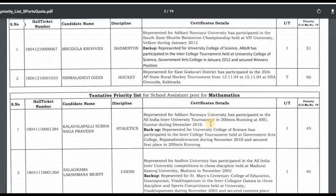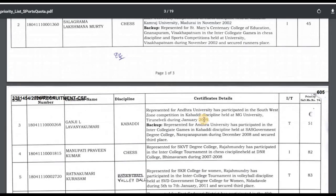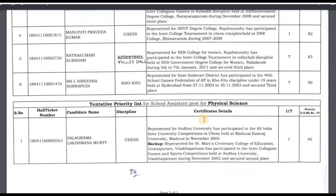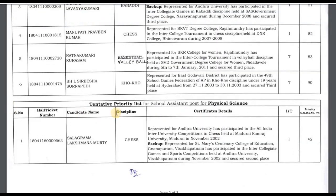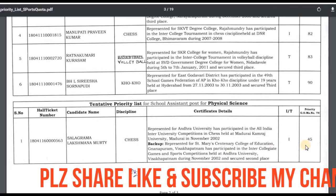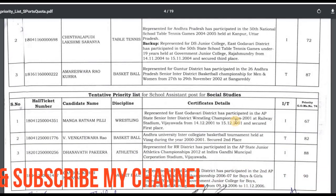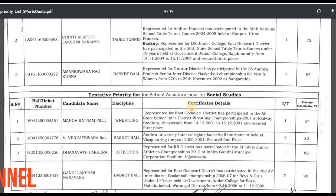Maths also has 5 to 6 members. And in physical science, there will be one or two members.